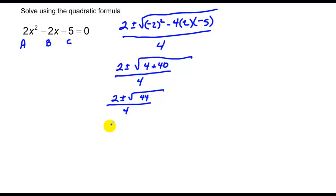44 has a perfect square in it, so that can be simplified, 2 plus or minus 2 root 11 over 4. Notice I have a GCF in the numerator of 2, so I can pull that out, left with 1 plus or minus square root of 11 over 4. The 2 and the 4 reduce, therefore my final answer is 1 plus or minus square root of 11 all over 2.